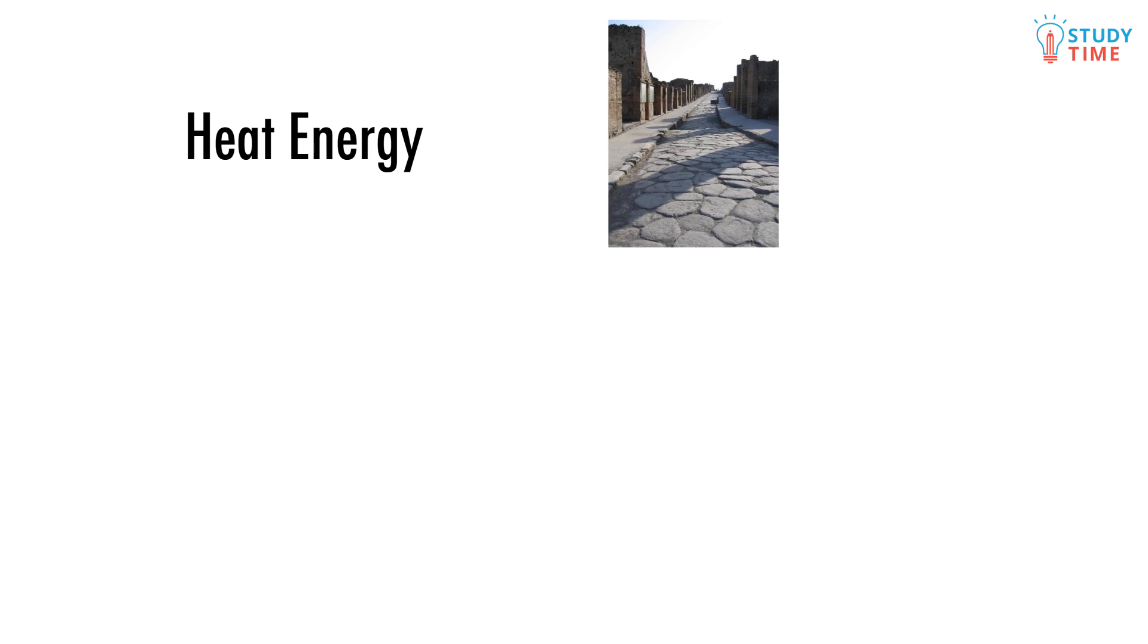For example, heat energy, like the pavement on a hot day. Even things that we think are really cold will have some heat energy. In fact, everything will have heat energy right up until it gets to negative 273 degrees Celsius. This is called absolute zero.